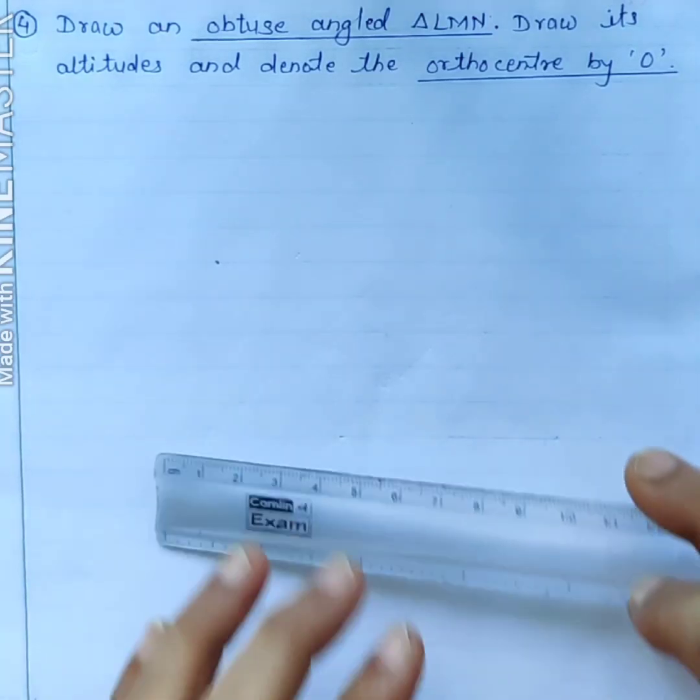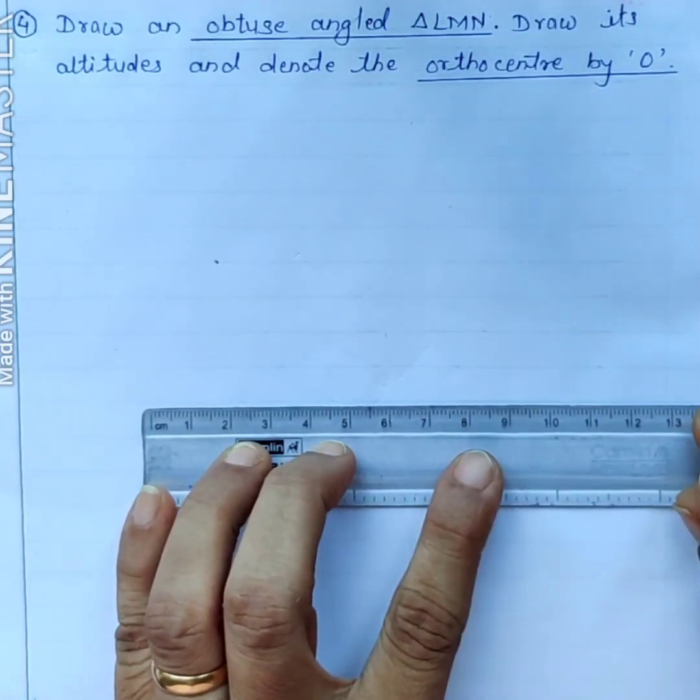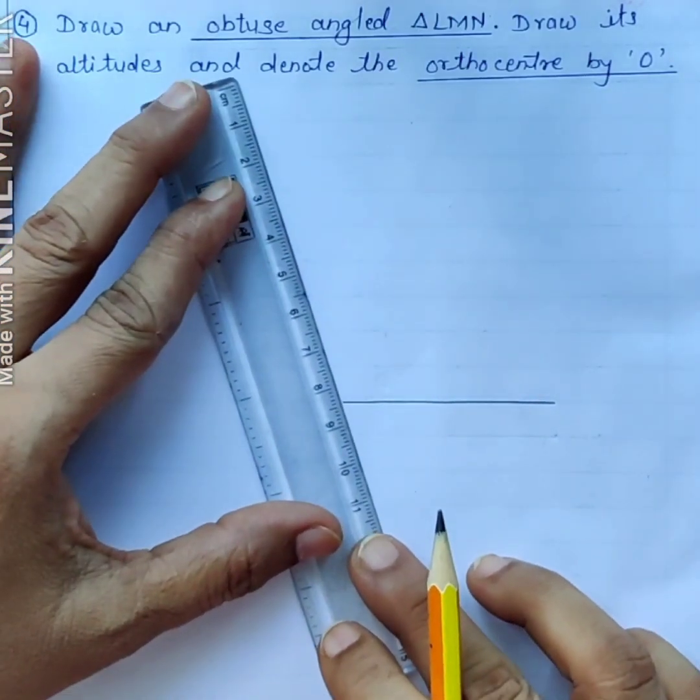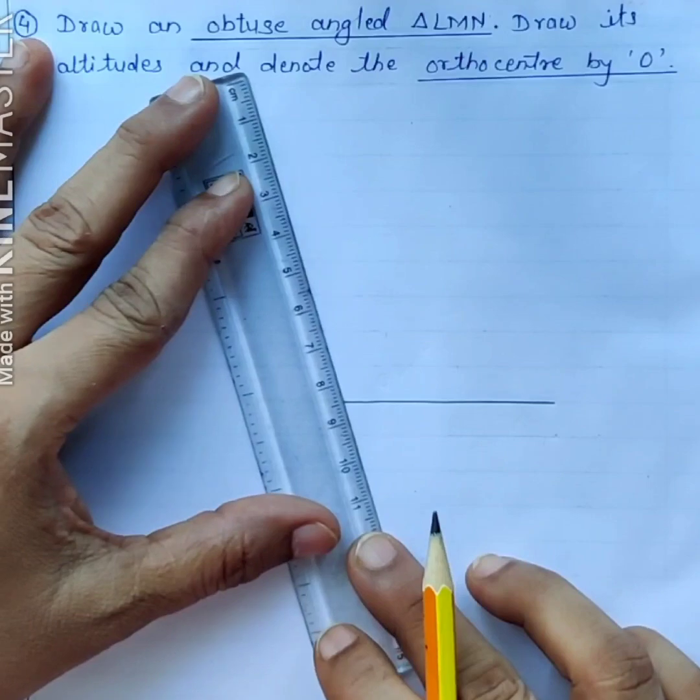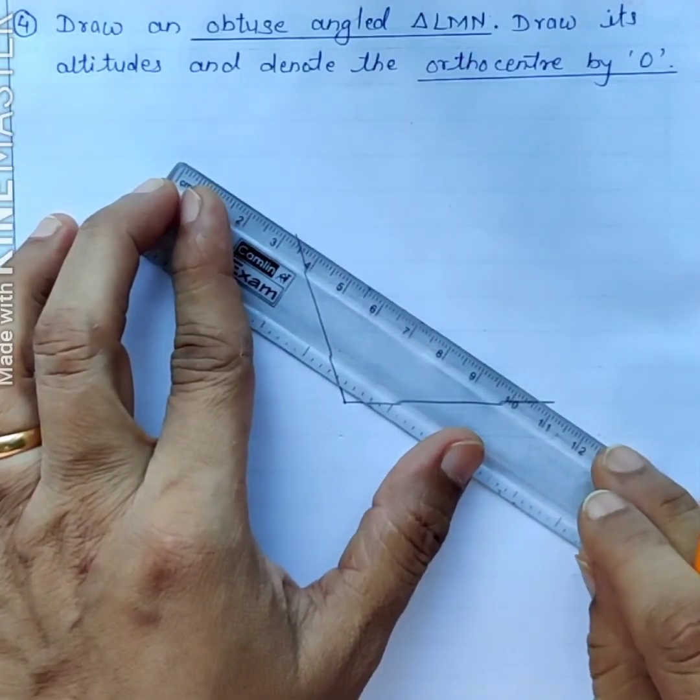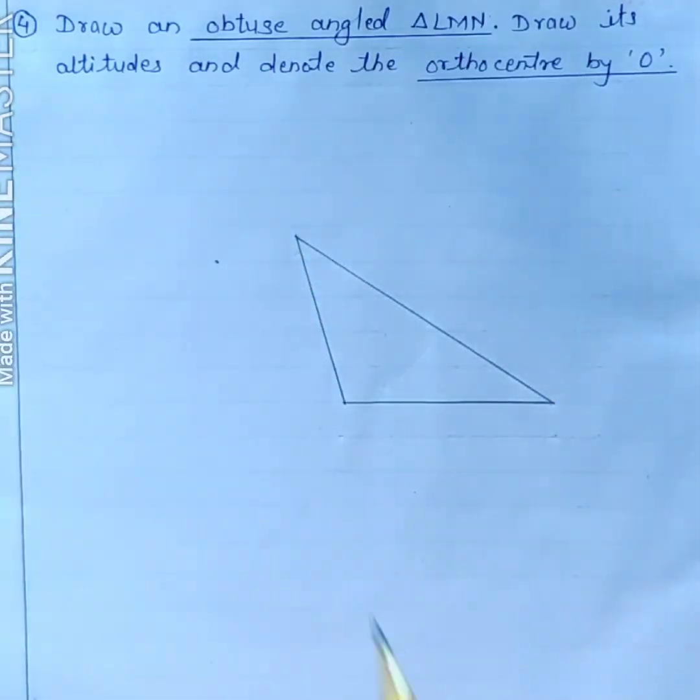Now you know what is an obtuse angle triangle. So we will draw obtuse angle triangle LMN. So this is an obtuse angle triangle LMN.